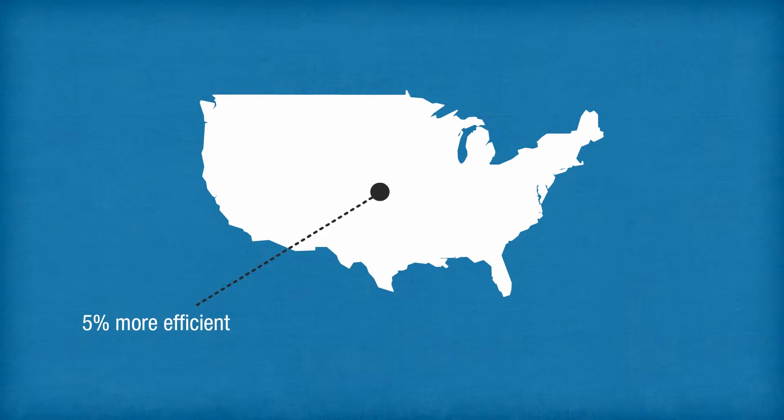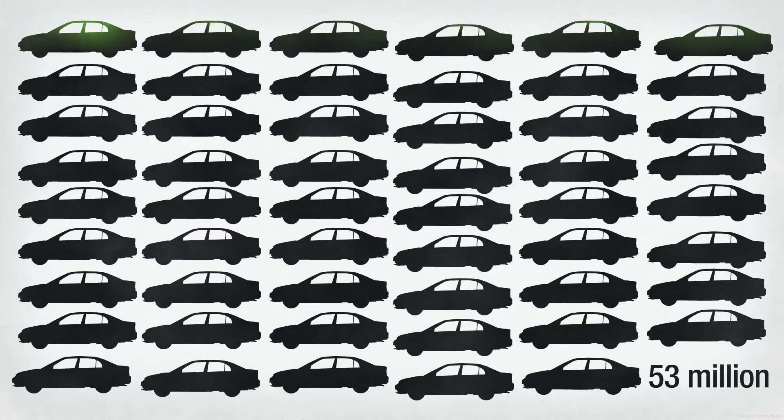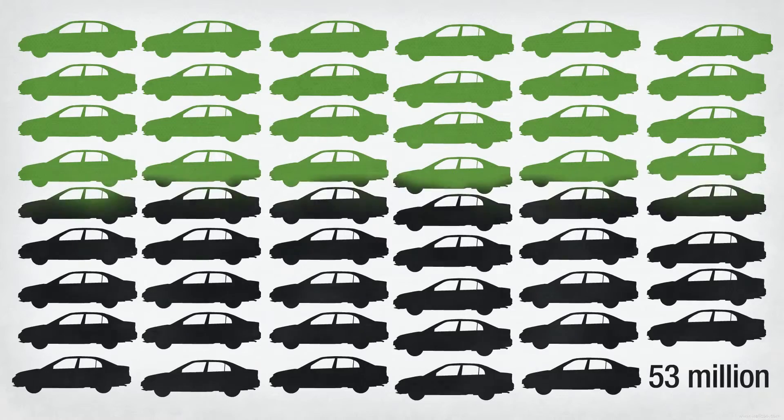In fact, if the entire U.S. grid were just 5% more efficient, it would be like permanently eliminating the fuel and greenhouse gas emissions from 53 million cars.